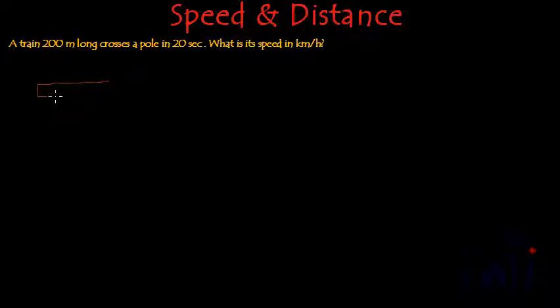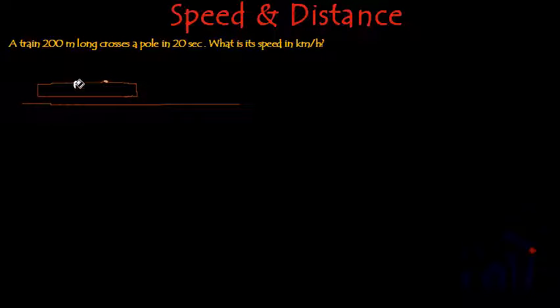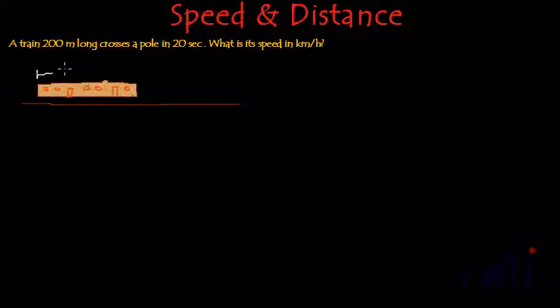As we all know, a train is a long vehicle. Suppose this is the train and this is the track. Let me color this train. They are saying that the length of the train is 200 meters — this is the length of the train.